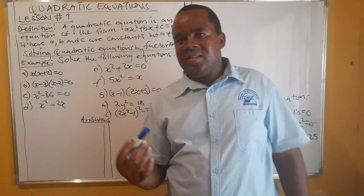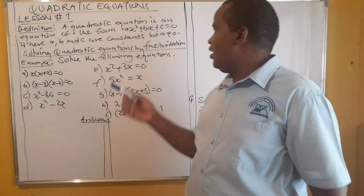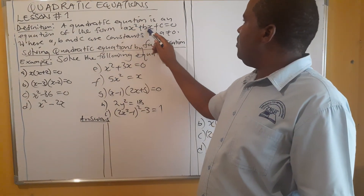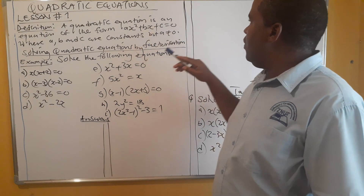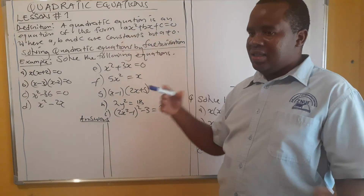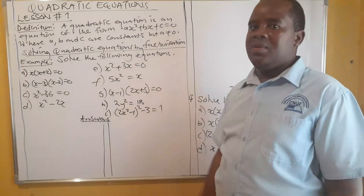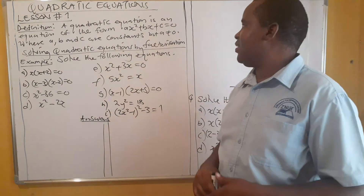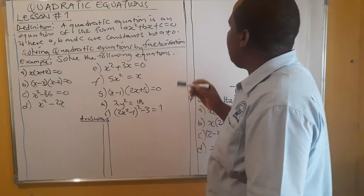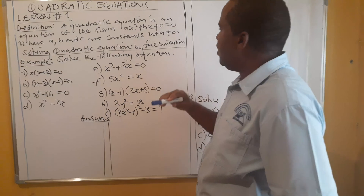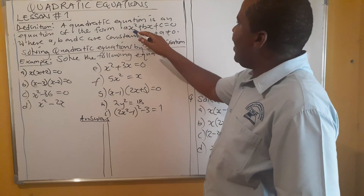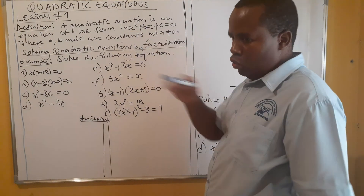A quadratic equation is an equation in this form: ax squared plus bx plus c. What that means is that a, b, and c are constants — they are just ordinary numbers. You can identify a quadratic equation if the highest degree of the terms is 2.